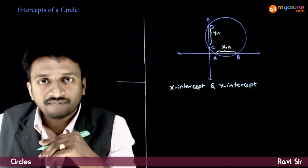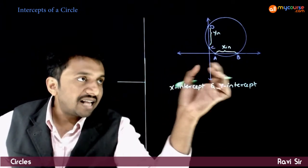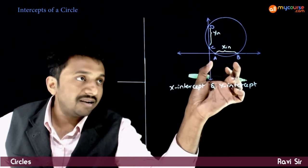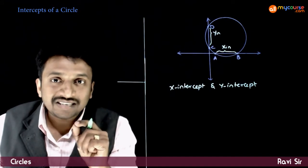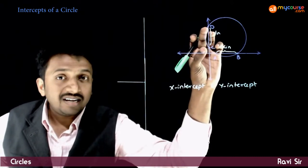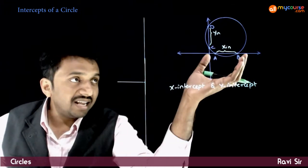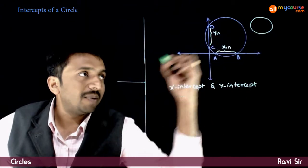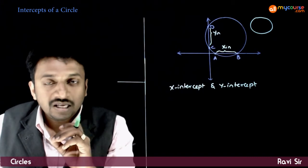The distance between C and D is called the y-intercept. If the circle touches the x-axis, points A and B coincide — they merge together — so the x-intercept equals zero. If the circle touches the y-axis, the y-intercept equals zero. If the circle does not touch the x-axis and lies completely above it, the x-intercept is not defined, and neither is the y-intercept.